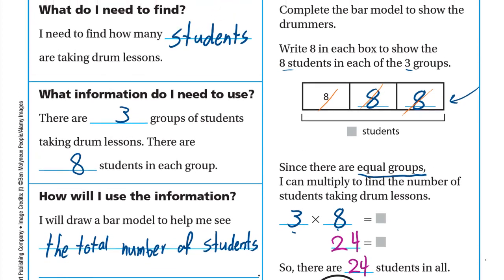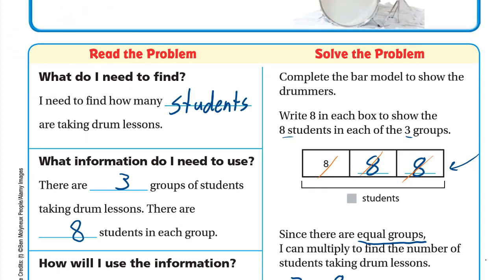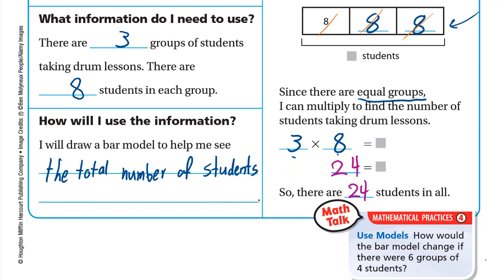Let's review: we have three groups of students taking drum lessons, with 80 students in each group. We drew three boxes because we have three groups, and wrote 8 inside each box. Since we have equal groups, we use multiplication: 3 (number of groups) × 8 (number in each group) = 24. You can verify by adding 8 three times.